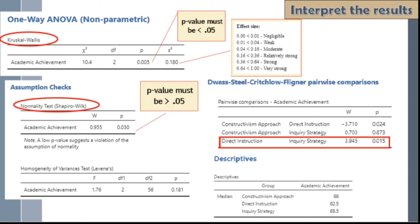For the descriptive statistics, as you noticed earlier while performing the test, I unchecked everything except the median. You can add more statistics according to what you need, but since we are using non-parametric tests, it is the median that we should report.